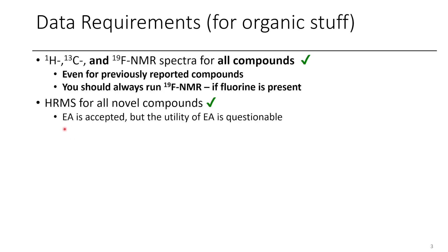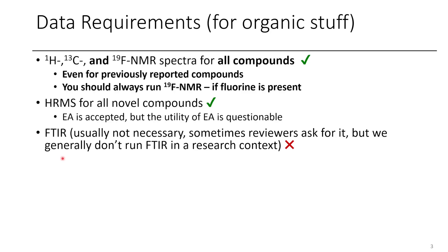If you have a new compound, you should definitely run HRMS. Most journals are pretty strict about this. If you can't get an HRMS, sometimes people will submit elemental analysis, but because you can just choose a very clean part of your compound or it could easily be thrown off by solvent, elemental analysis can be less than ideal. Another solution is to do X-ray crystallography. Sometimes people include FTIR data, but in the current age it's fairly rare to run FTIR on a sample unless absolutely needed. Some journals will require it, though most are pretty lax about that.